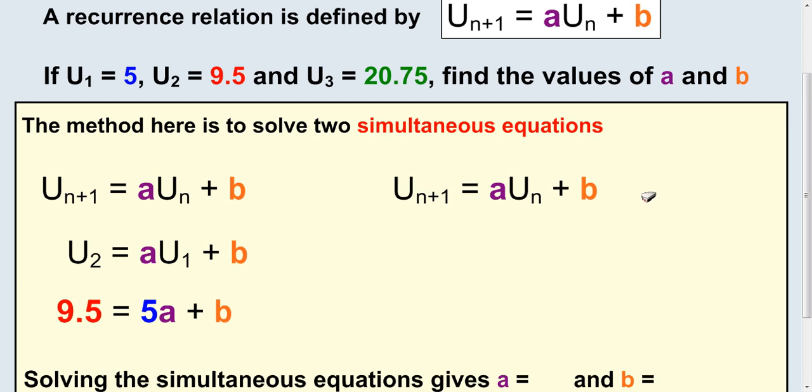Let's do it again, but this time use u of 2 and u of 3. If we call u of n u of 2, then this must be u of 3. Substitute the numbers in and we end up with 20.75 equals 9.5a plus b.